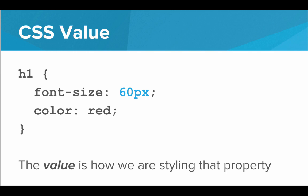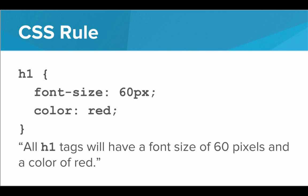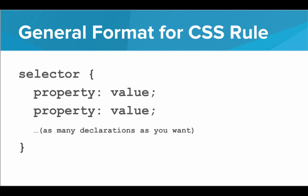It's just like what we wrote inside the style attribute — we have the property and the value. The property says which feature we are styling, and the value says how we are styling that feature. For example, we want to give the color red or the font size 60. When we make a CSS rule, we're telling the browser exactly how the website should look and feel. The general format for a CSS rule is: selector, curly braces, then a series of property, colon, value, semicolon — as many declarations as you want to define the style for that selector.